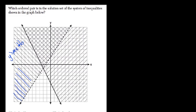So it's dotted here, the line itself, because we don't include y values that are on the line, just values that are greater than.